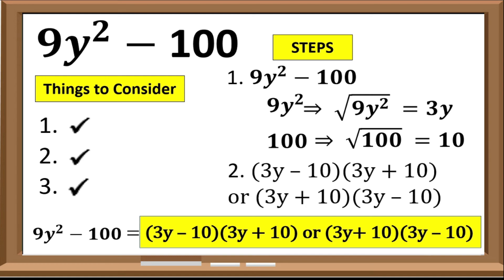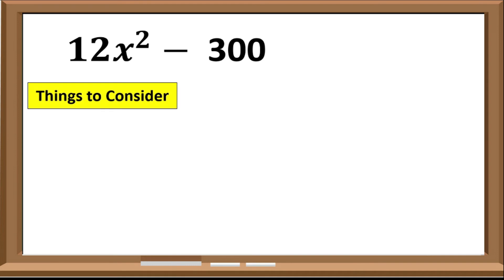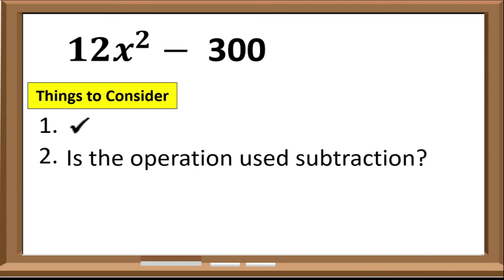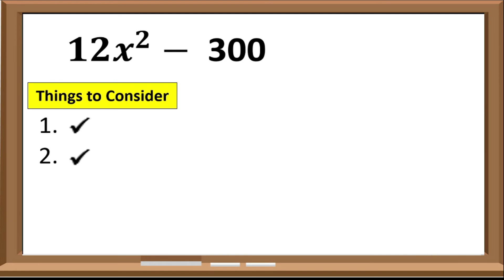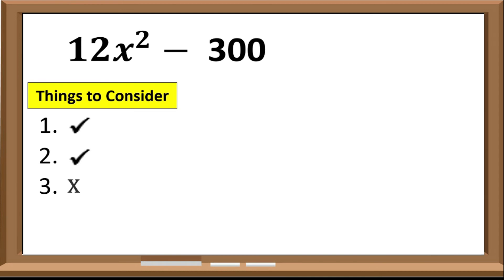Let us have the last example: 12x² − 300. Let us check if this expression can be factored using difference of 2 squares. Is it a binomial? Check. Is the operation used subtraction? Check. Are the terms perfect squares? No. Since the third condition was not met, we will do the factoring using GCF first.